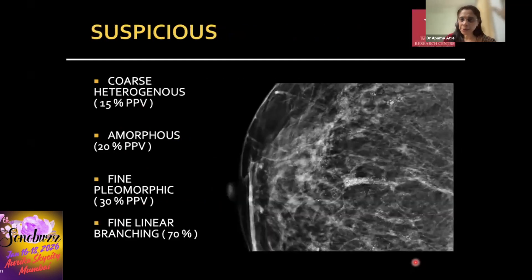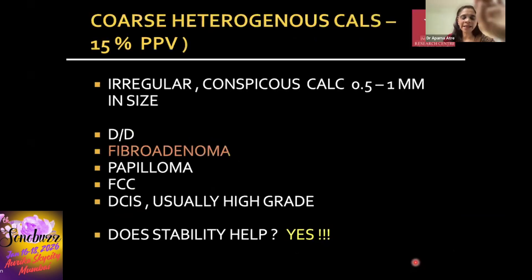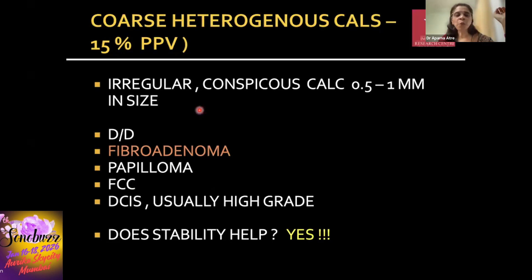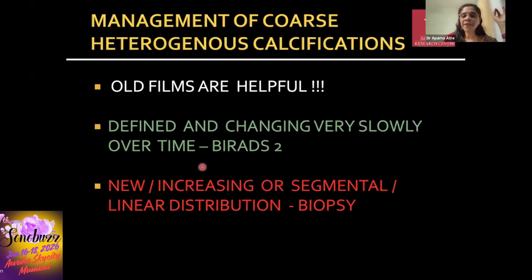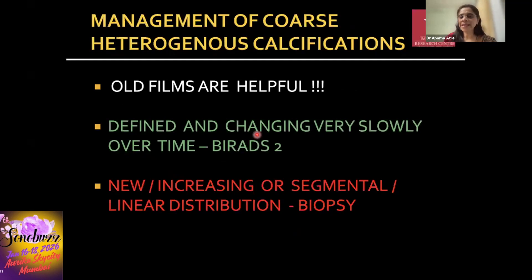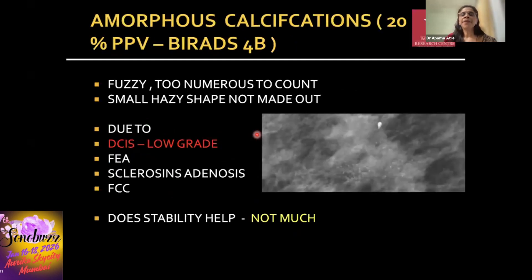Coarse heterogeneous calcifications have a positive predictive value of almost 15 percent. These are irregular, conspicuous calcifications about 0.5 to 1 mm in size; the commonest differential is fibroadenoma, and stability on old films is very helpful. If these calcifications are stable and changing slowly in keeping with fibroadenoma degeneration, they are BI-RADS 2. If they are new, increasing, or in a segmental or linear distribution, we proceed to biopsy.